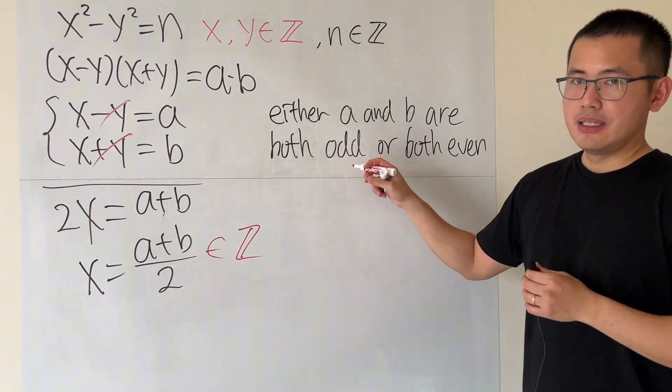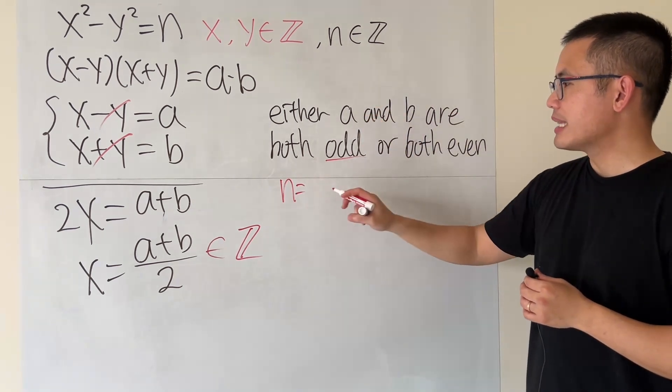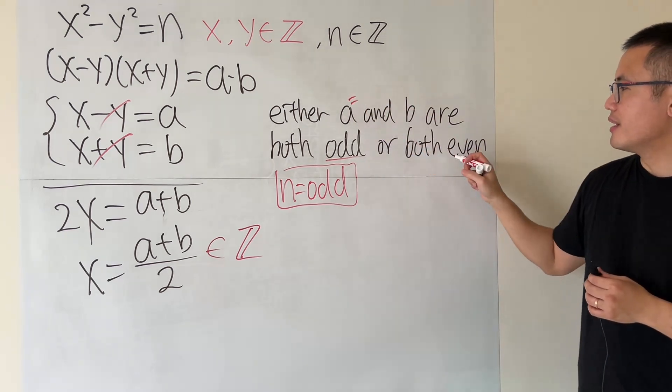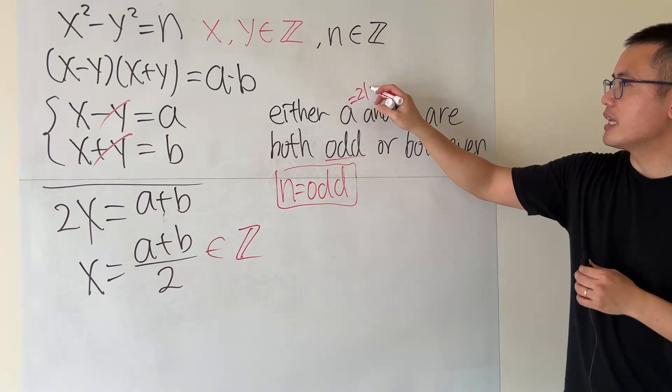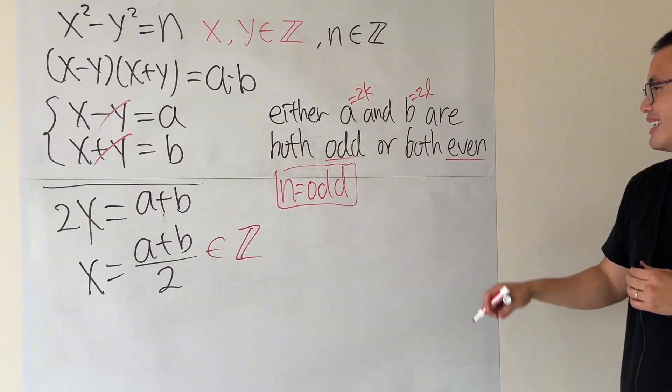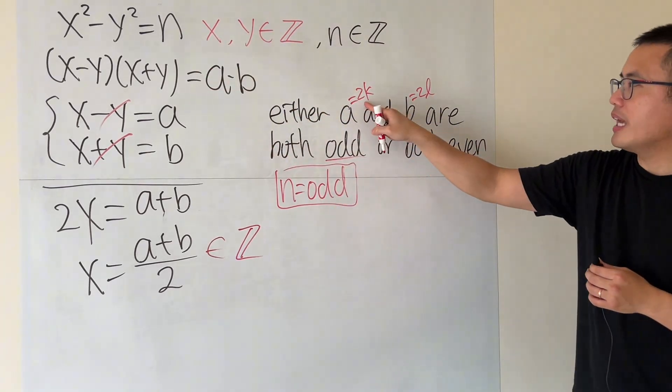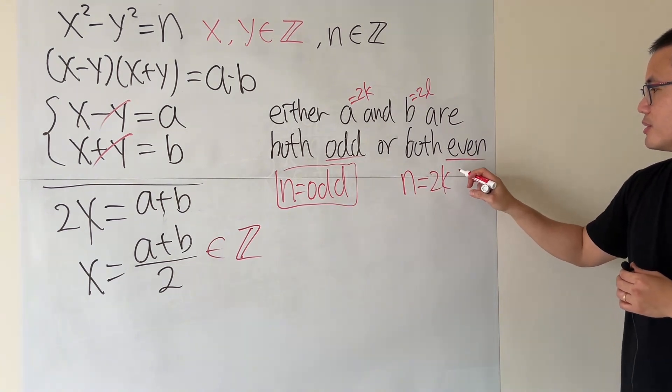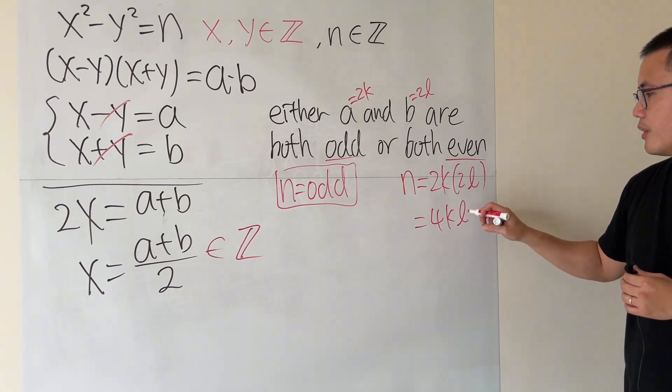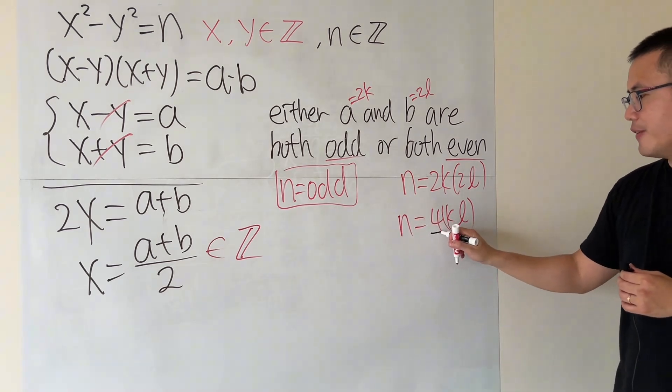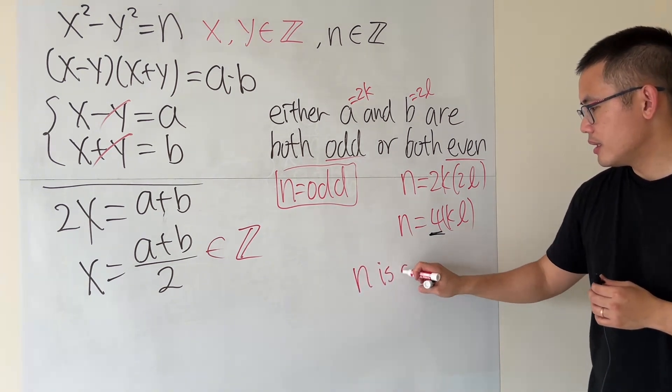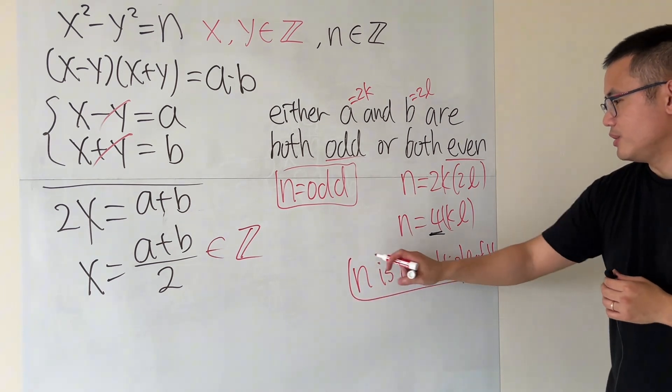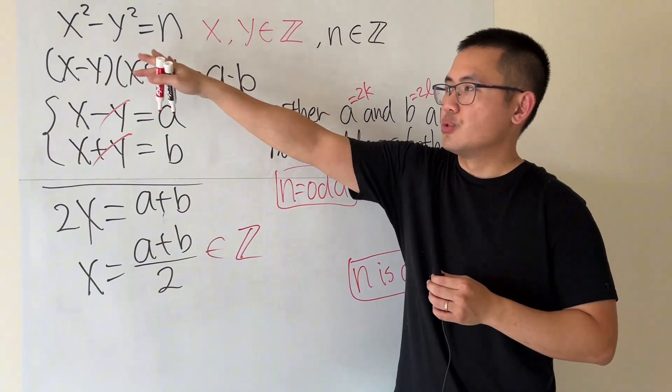If they are both odd, then n is equal to an odd number times odd number, so n is also equal to an odd number. Now, if a and b are both even, let's say a is equal to 2 times some integer that say k, and let's say b is equal to 2 times some other integer that say l. Here, put this back to n, 2k times 2l is 4kl. So the key right here is that n is going to be 2k times 2l, n is equal to 4kl. And kl is meant to be an integer. And as you can see, we have a 4 right here. So that means n is a multiple of 4.